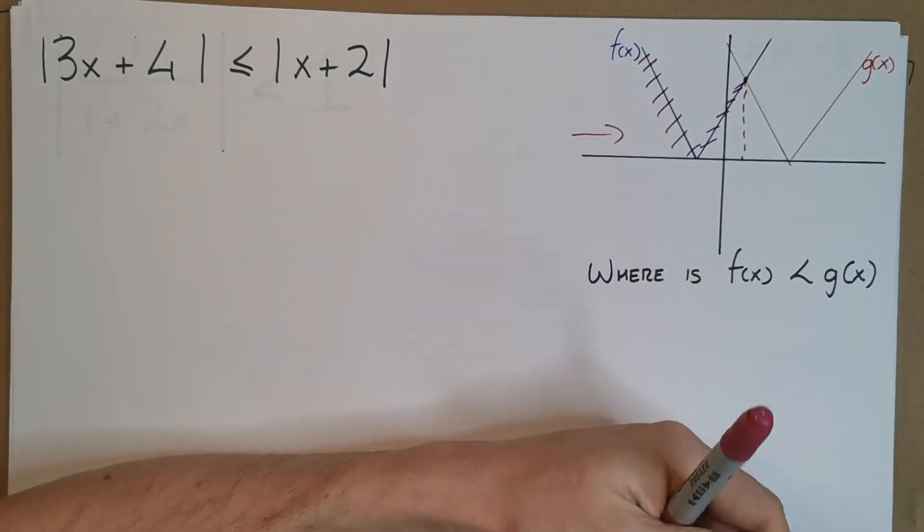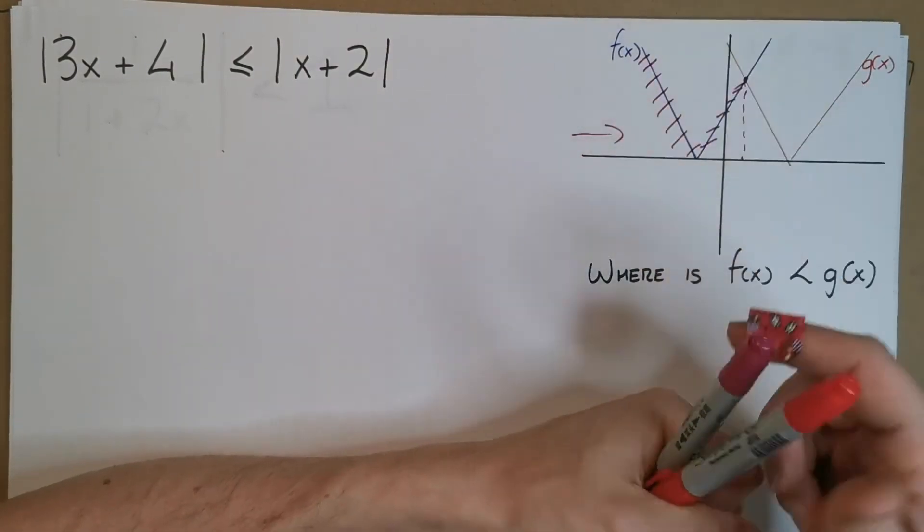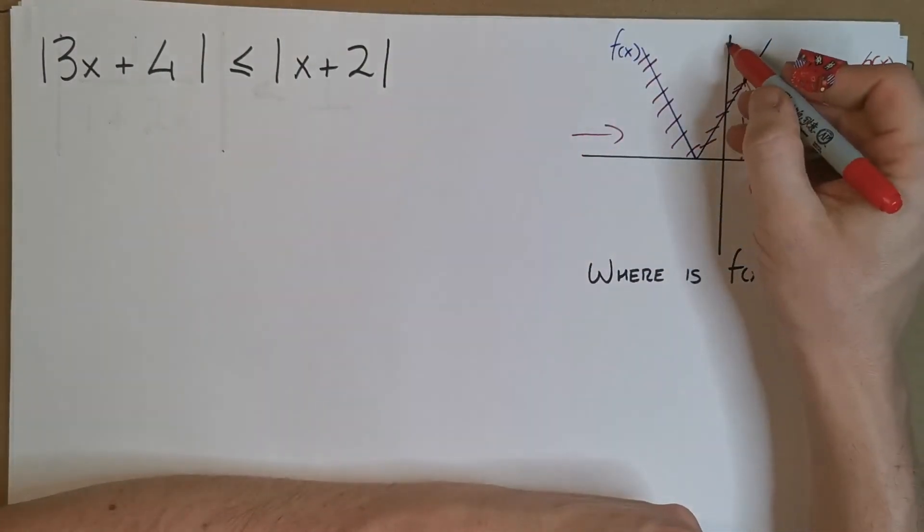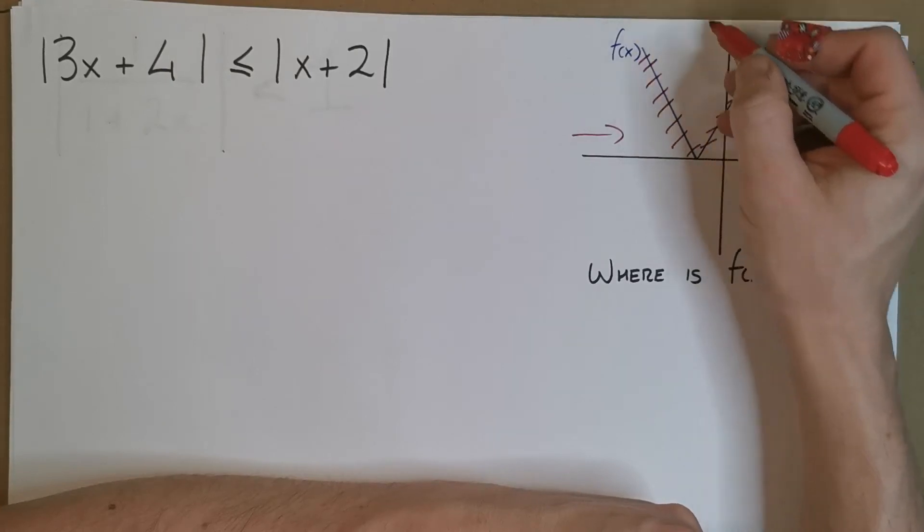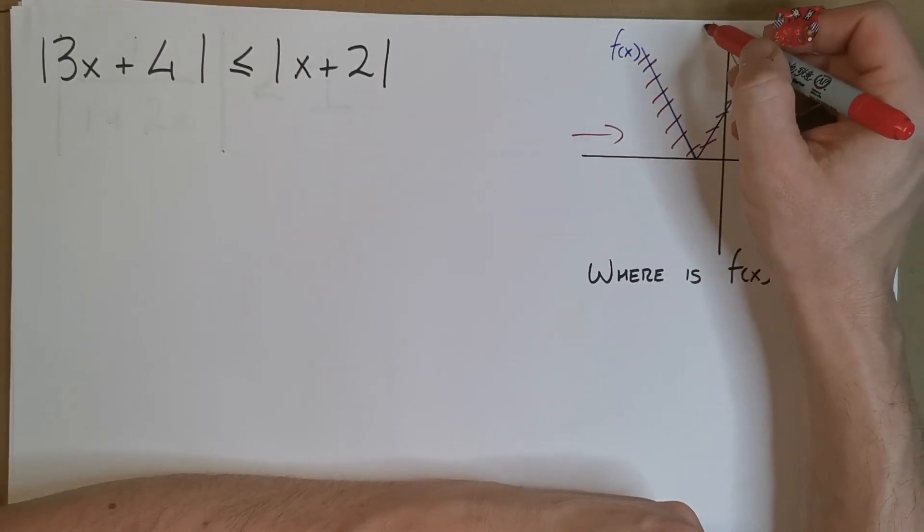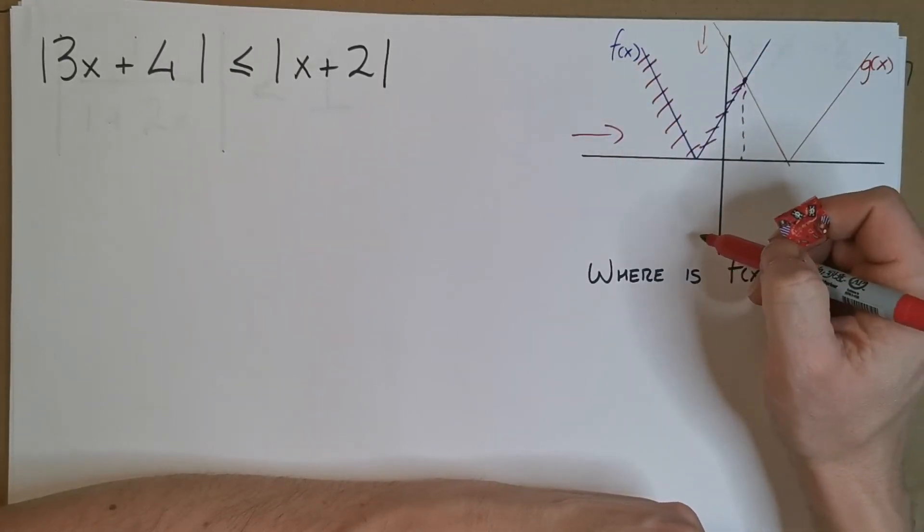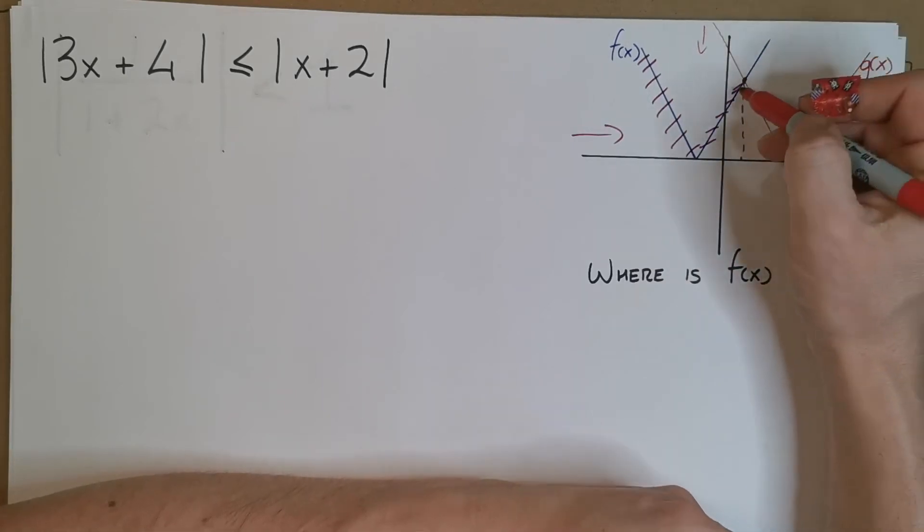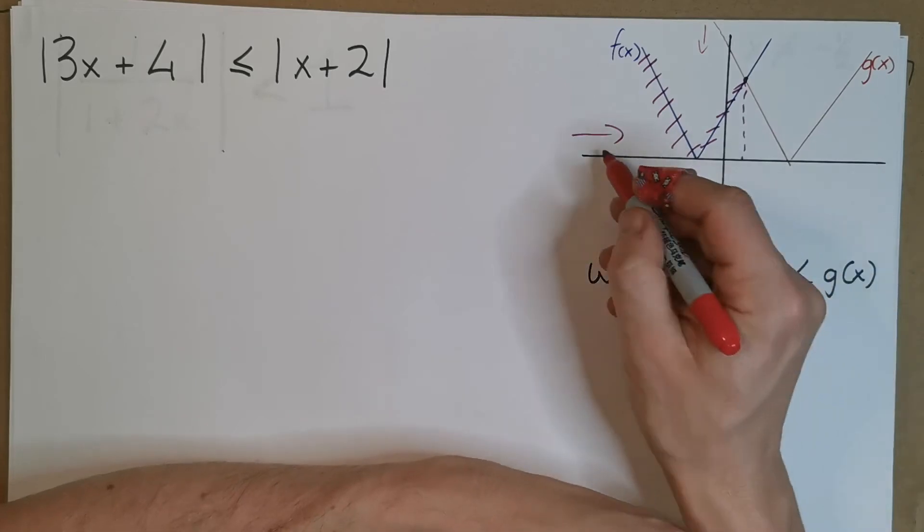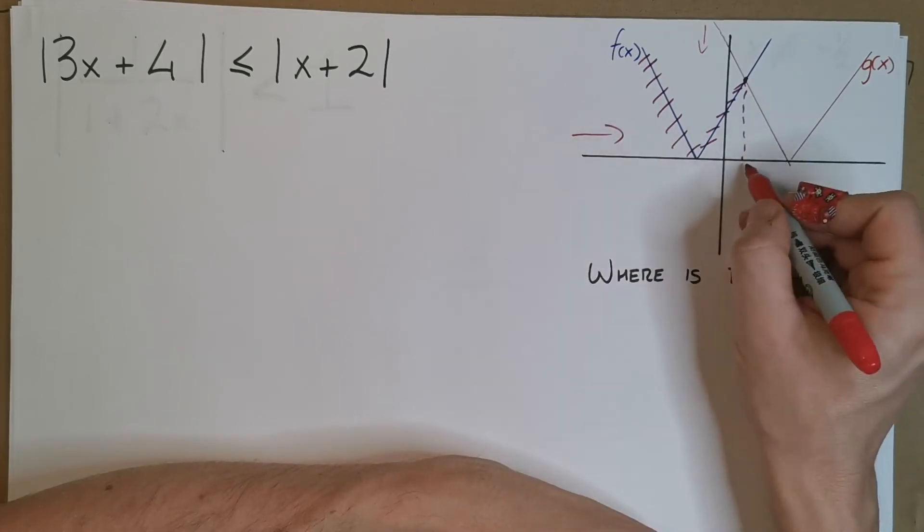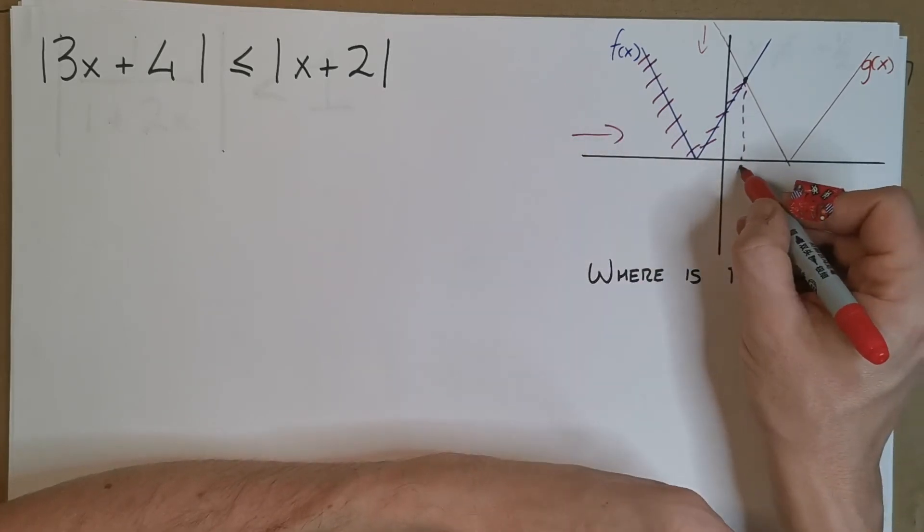Even though f(x) goes really high back up this way, g(x) also goes really high. It's always going to be above, it's always going to be looking down on that f(x) graph. Whereas now when f(x) crosses over, it's always going to be looking down on g(x). So all the values from here all the way up as far as this value right here.